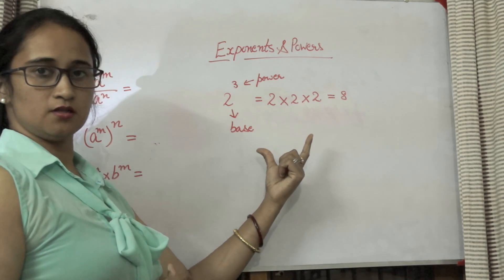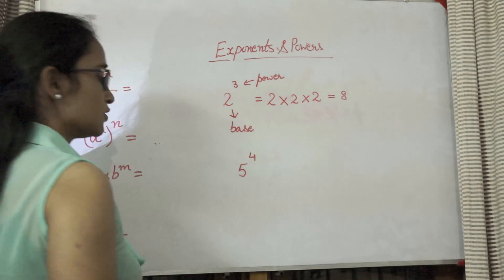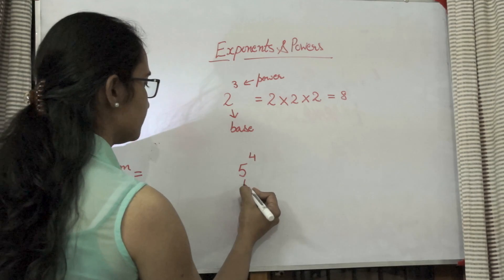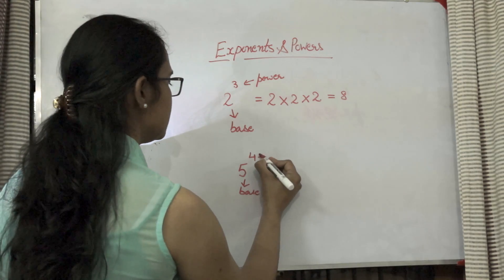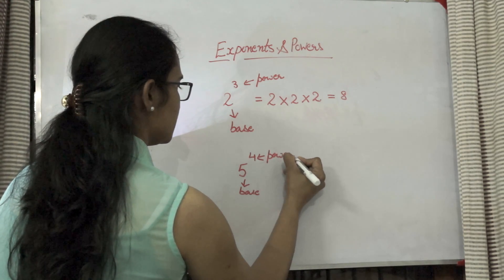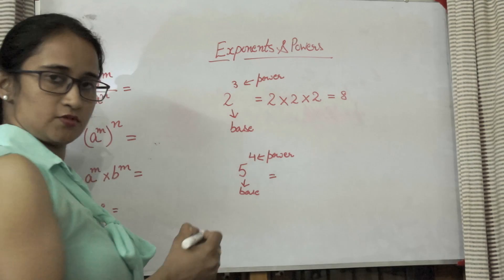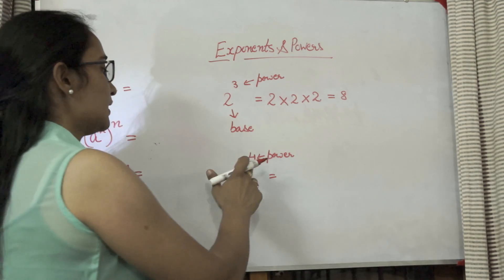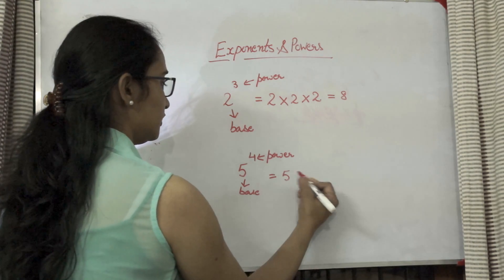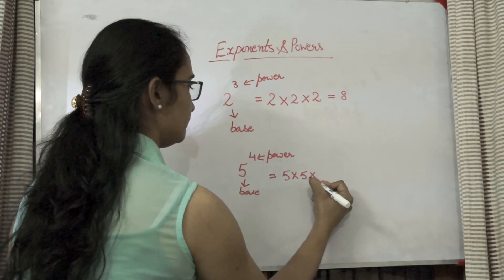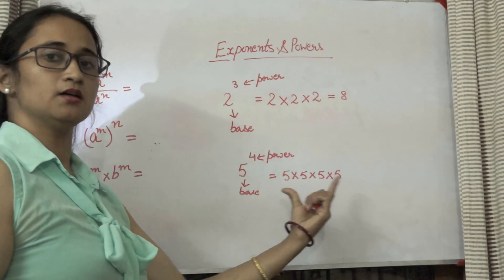This is the basic question based on exponents. If I say 5 raised to power 4, what is the base here? Base is 5. And what is the exponent or power? That is 4. So if you want to solve it, how many times will you multiply 5 by itself? 4 times. So whatever is the power, that many times you need to multiply the base. So 5 raised to the 4 is equal to 5 × 5 × 5 × 5. You can multiply it and you will get the answer.